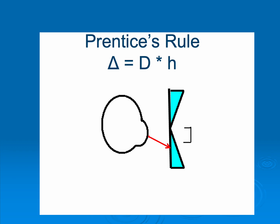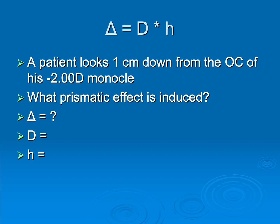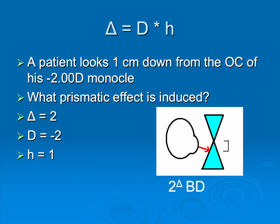In this case, it says that the prismatic power that your glasses induce is equal to the dioptric power of your glasses multiplied by the distance you look away from the optical center in centimeters. Let's go back to our problem. Patient is looking one centimeter down from the optical center of a minus two monocle. So dioptric power is minus two. He's looking one centimeter away. So we have two prism diopters being induced. But prisms matter in the orientation. So which way you point the base is very important. We need to know two prism diopters oriented which way. And because we're looking base down, it's two prism diopters base down.